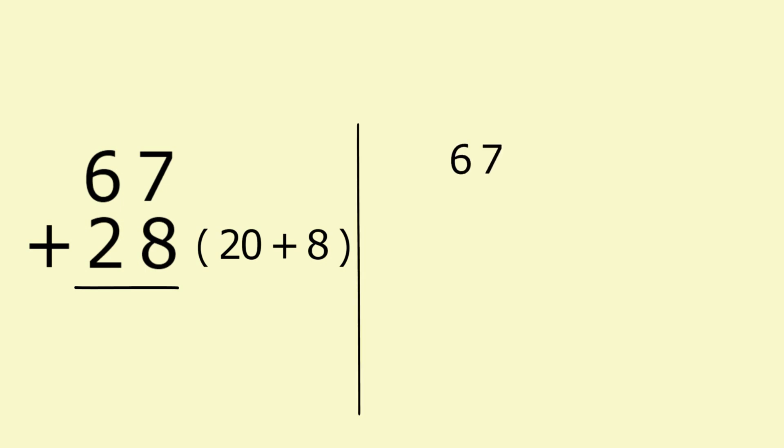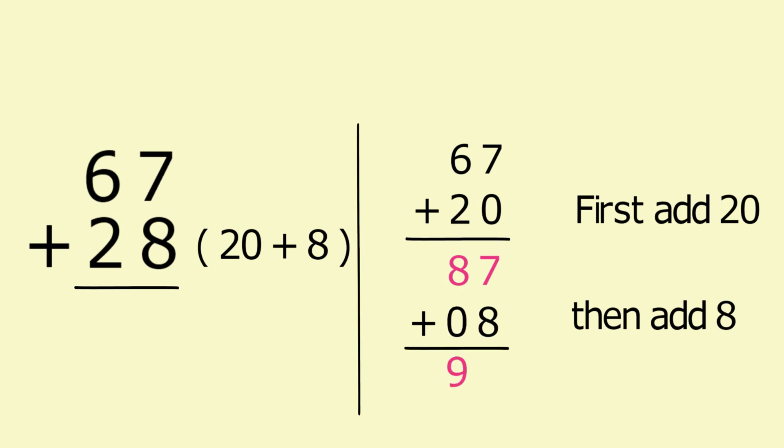Now consider another example, 67 plus 28. So we can write 28 as 20 plus 8. Hence we can write 67, then we will first add 20 to it, so we got 87. After adding 20, we have made the problem simpler. You will just have to solve 87 plus 8 which gives us 95.